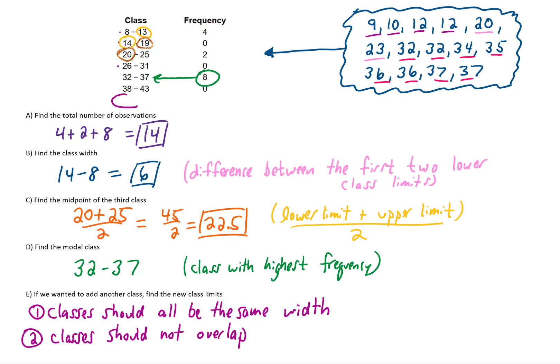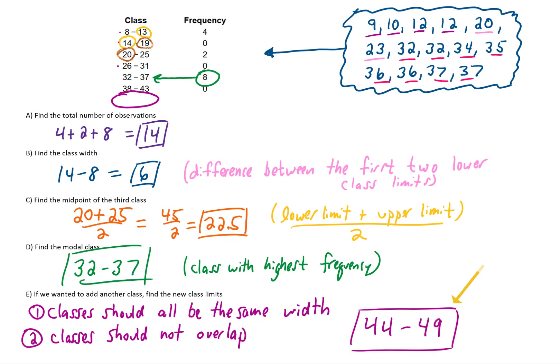To answer the question about adding a new class: since our previous class ended at 43, our new class should start at 44. To find the upper class limit, I'll observe that to get every one of these upper class limits we can just add 5 to the lower class limit. So if we add 5 to 44, we get 49. That answers all of the questions here.